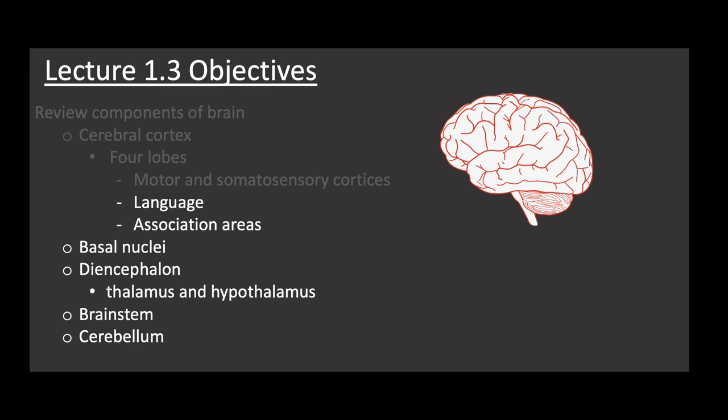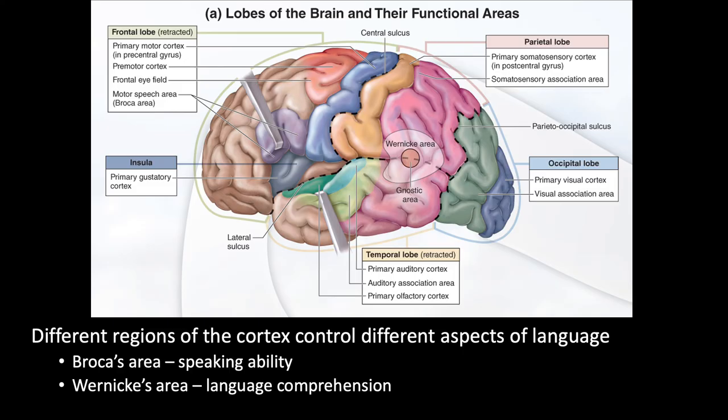Now let's investigate the regions of the brain associated with language. Language abilities are only found in the left hemisphere. Language involves two capabilities: expression — speaking — and comprehension — understanding. Broca's area, located in the left part of the frontal lobe, is responsible for speaking ability. It plans a motor program for speech — a set of instructions sent to the motor area to allow you to form words.